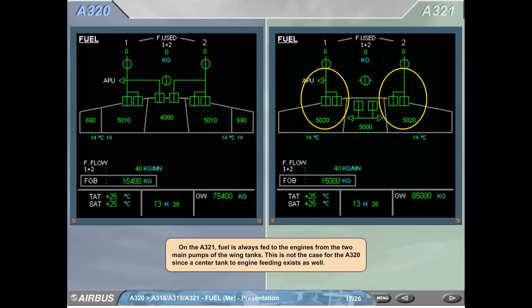On the A321, fuel is always fed to the engines from the two main pumps of the wing tanks. This is not the case for the A320 since the center tank to engines feeding exists as well.